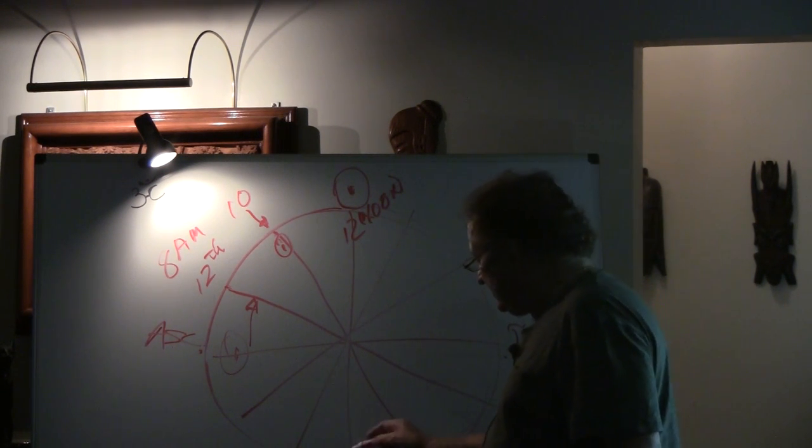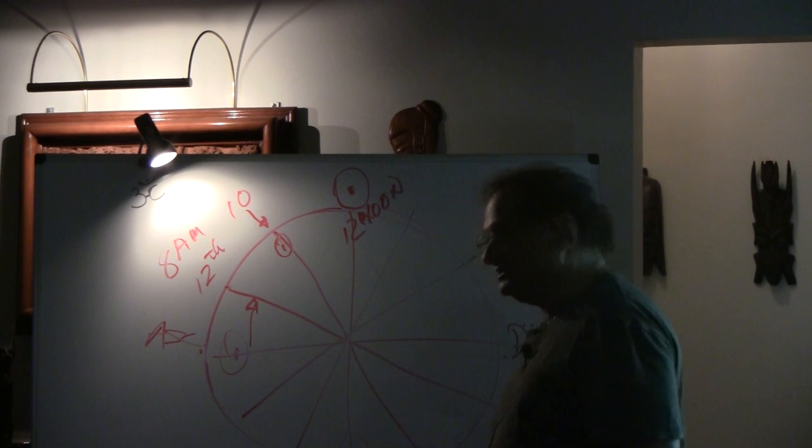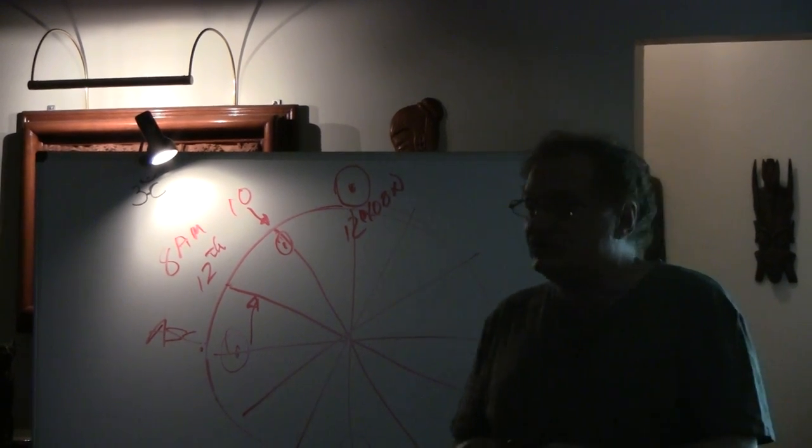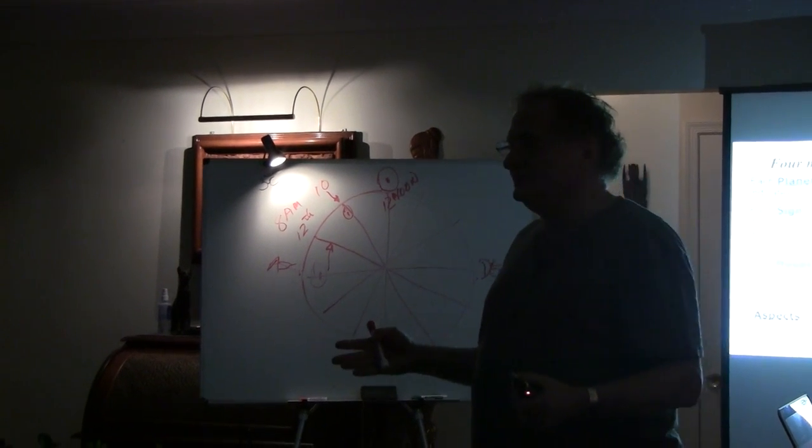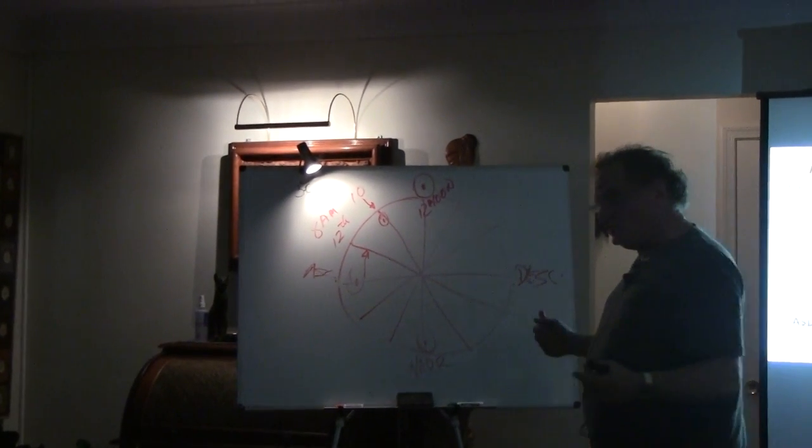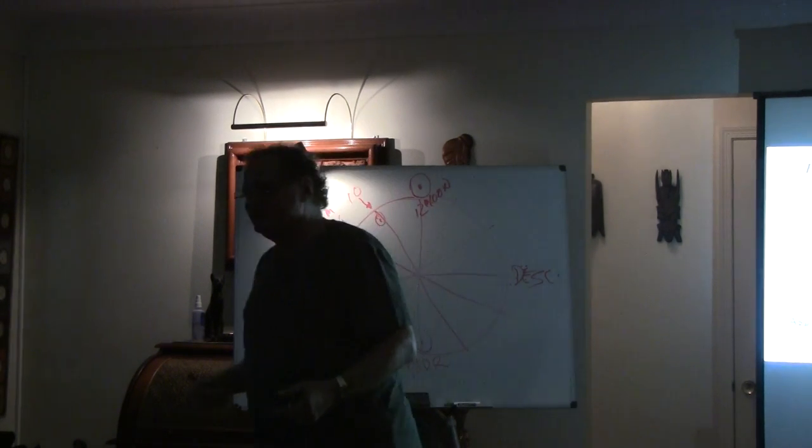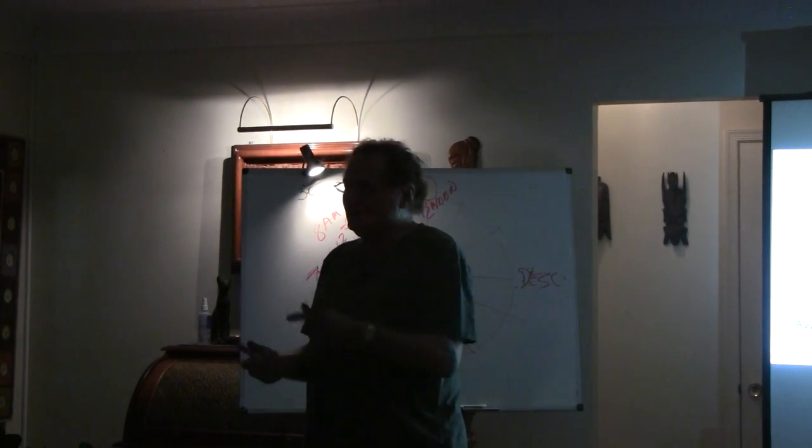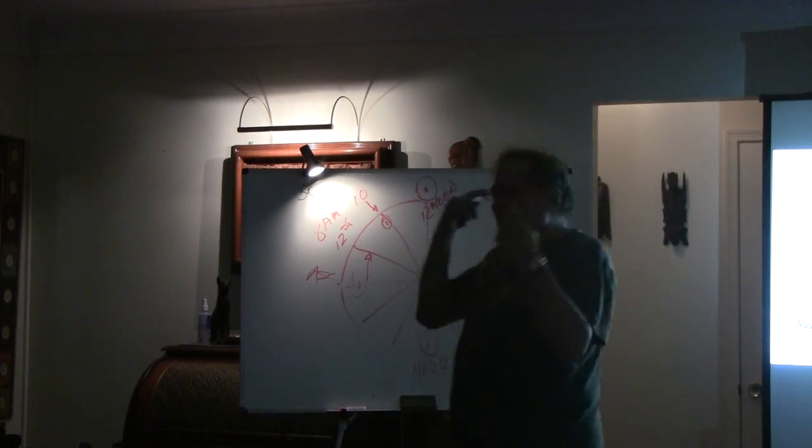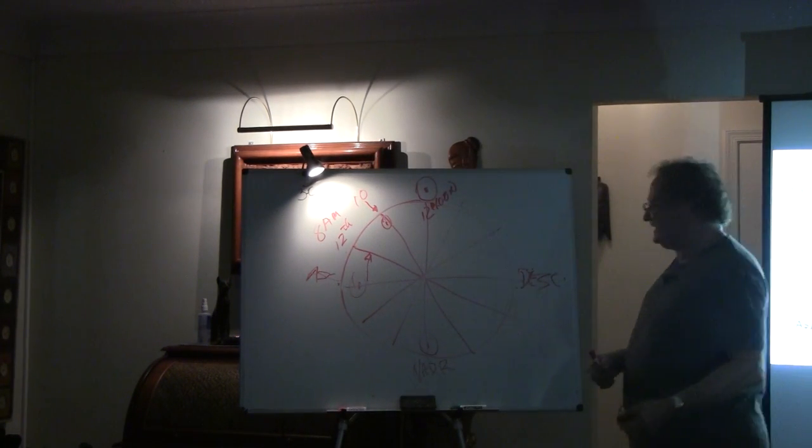So if you're born at 12 midnight, you're going to see the sun's down here. Now, let me tell you, when you're doing a chart, this is the quickest way to check to make sure you're accurate because it's easy to make a 12-hour mistake in doing a chart. If somebody says they're born at 8 a.m. and you do it for 8 p.m., you're 12 hours off, right?